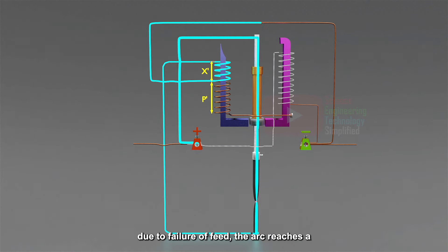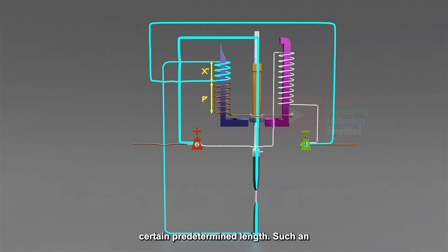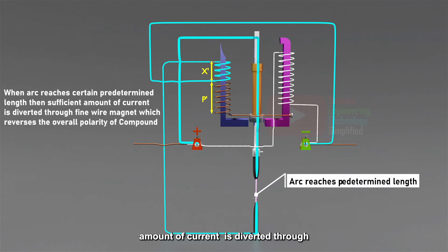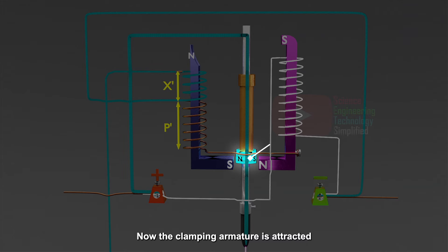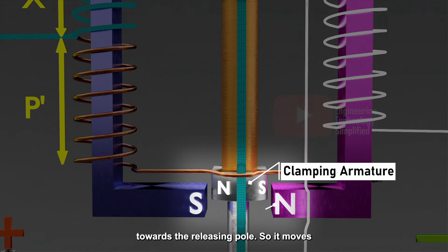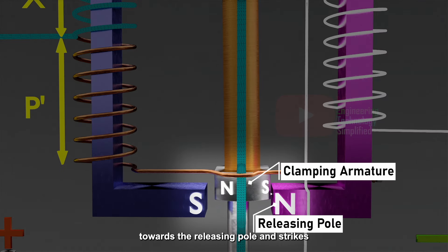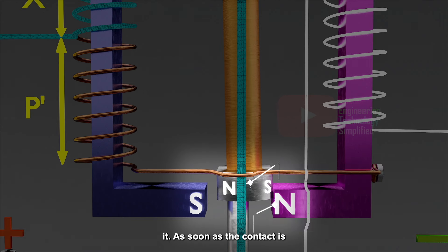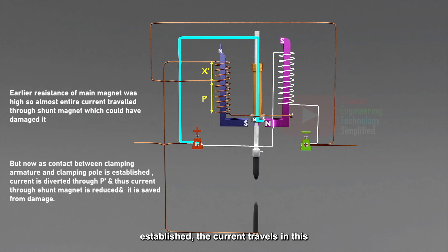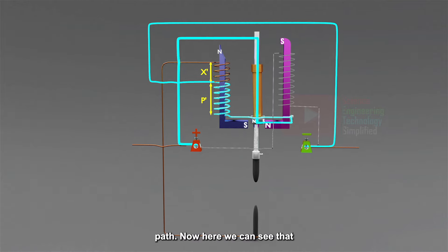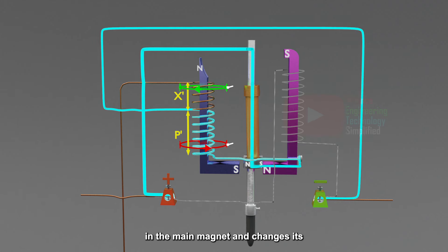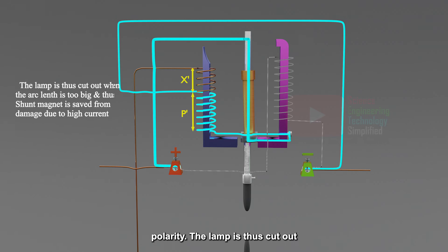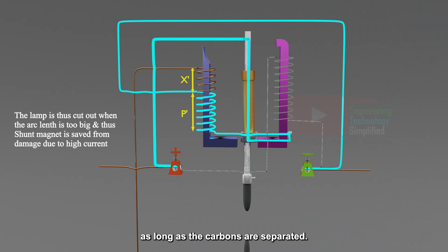Suppose, due to failure of feed, the arc reaches a certain predetermined length. Such an amount of current is diverted through the fine wire that the polarity of the compound magnet is reversed. Now the clamping armature is attracted towards the releasing pole, so it moves towards the releasing pole and strikes it. As soon as the contact is established, the current travels in this new path. We can see that current flows in the opposite direction in the main magnet and changes its polarity. The lamp is thus cut out as long as the carbons are separated.